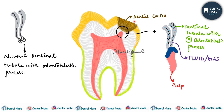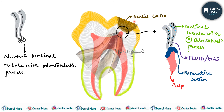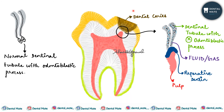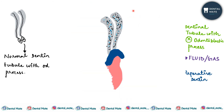Dead tracts are most commonly seen in areas with narrow pulp horns, because of the crowding of odontoblasts in those areas. In the ground section you can see the dead tract along with sclerotic dentine formation and a seal from the pulpal area, preventing the dentinal tubules from contacting the pulp and causing pulpal inflammation.